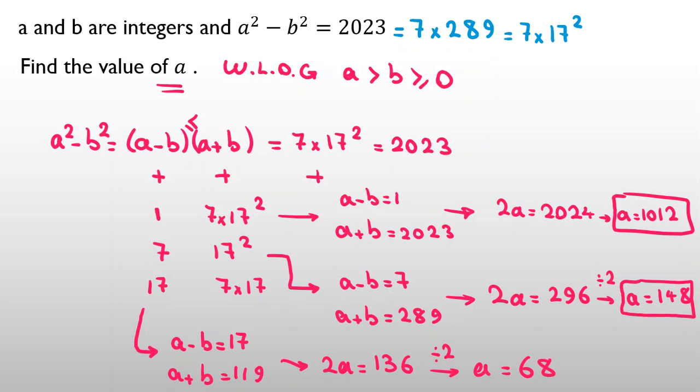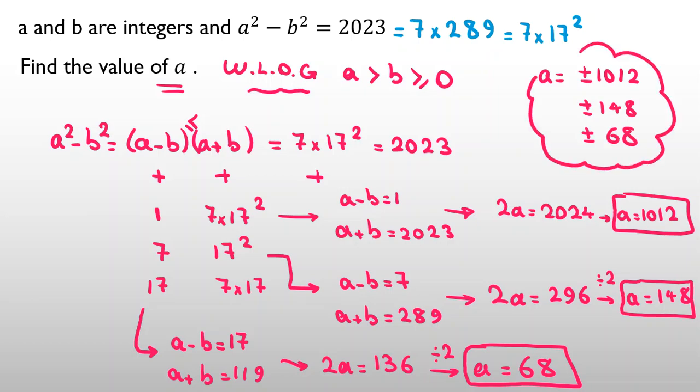And let me tell you something. As homework, try to check this a and also find b in each case. Try to find a and b and check the main equation. Because we said without loss of generality, if I want to write all values of a, you should say ±1012, ±148, ±68. Find these answers for a, and as homework try to take all of these values and also find b.